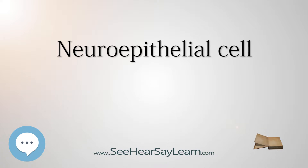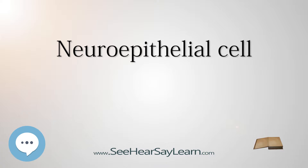Neuroepithelial Cell Proliferation. Neuroepithelial cells are a class of stem cell and have similar characteristics, most notably the ability to self-renew. During the formation of the neural tube, neuroepithelial cells undergo symmetric proliferative divisions that give rise to two new neuroepithelial cells. At a later stage of brain development, neuroepithelial cells begin to self-renew and give rise to non-stem cell progenitors, such as radial glial cells simultaneously by undergoing asymmetric division.